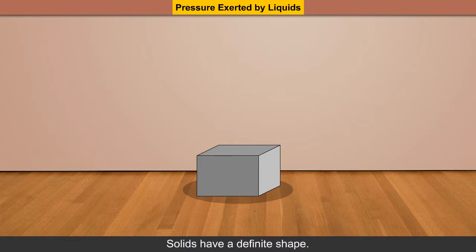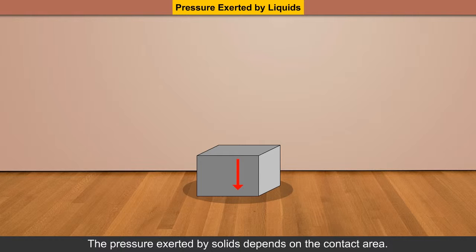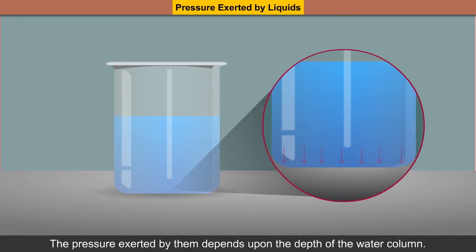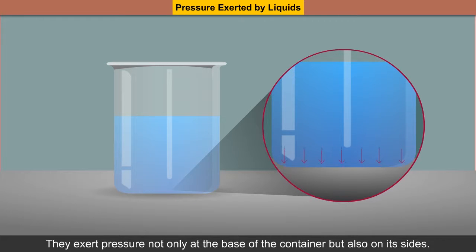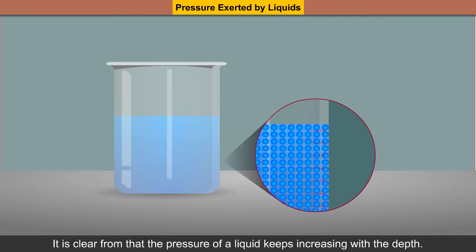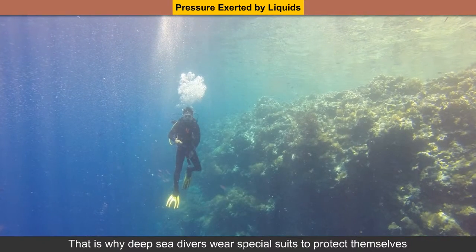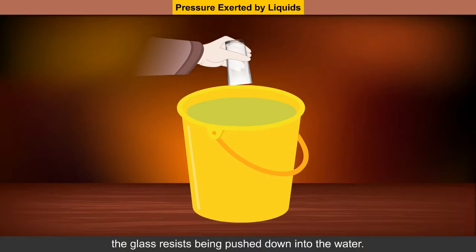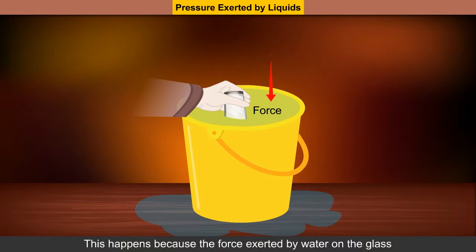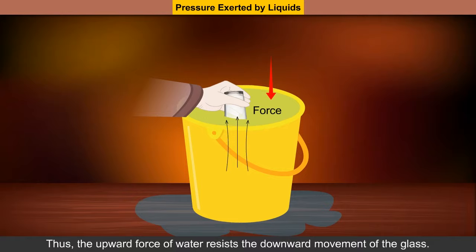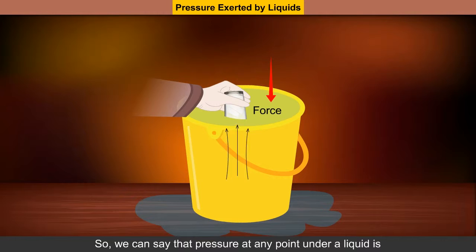Pressure exerted by liquids. Solids have a definite shape and the pressure exerted by solids depends on the contact area. However, liquids do not have a definite shape. The pressure exerted by them depends upon the depth of the water column. They exert pressure not only at the base of the container but also on its sides. The pressure of a liquid keeps increasing with depth. That is why deep sea divers wear special suits to protect themselves from the increasing water pressure. When we try to push an inverted glass into a bucket full of water, the glass resists being pushed down because the force exerted by water on the glass is much more than the force exerted by you. Thus, the upward force of water resists the downward movement of the glass, and pressure at any point under a liquid is due to the weight of the liquid column above that point.